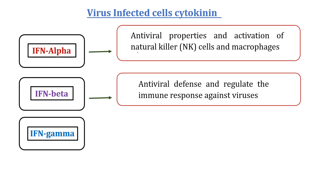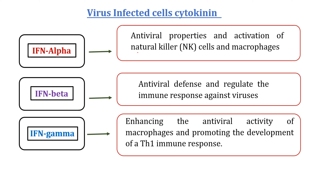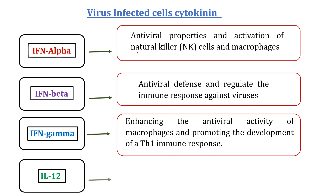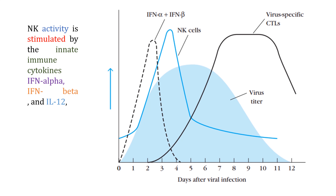Interferon gamma is primarily produced by activated T cells or natural killer cells, and to a lesser extent by virus-infected cells. Its functions include enhancing the antiviral activity of macrophages, promoting the development of a TH1 immune response, and activating other immune cells. Interleukin-12 plays a crucial role in stimulating natural killer cells and is typically produced by antigen-presenting cells such as macrophages and dendritic cells in response to microbial infection including viral infection. These cytokines stimulate NK cells, quickly leading to a rise in the NK cell population.